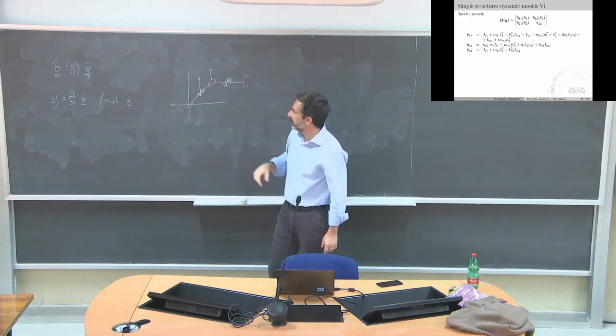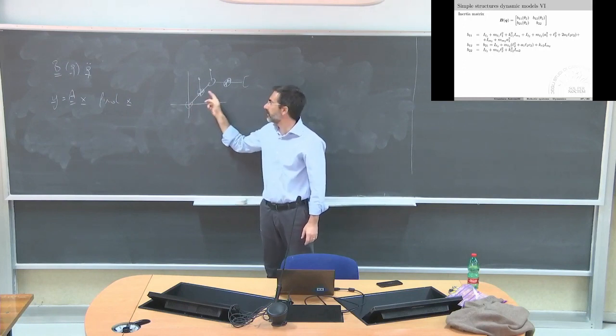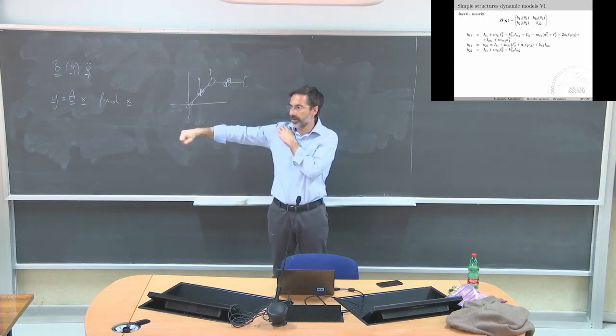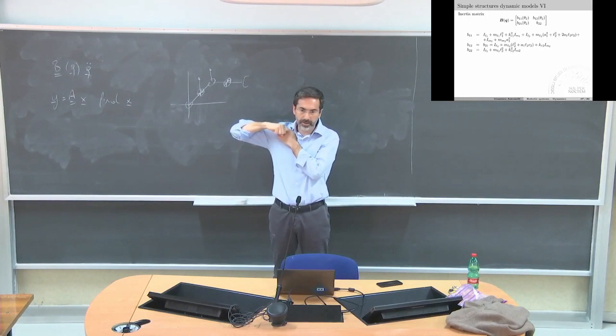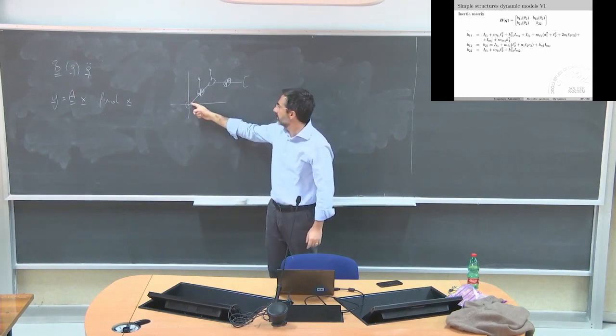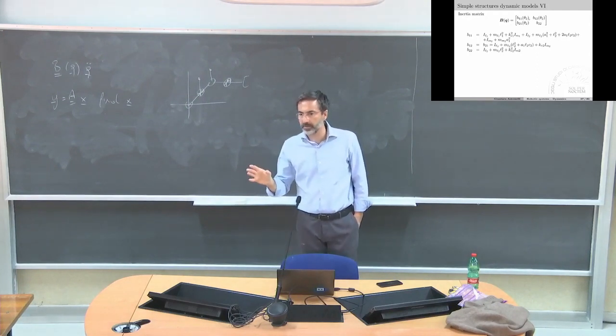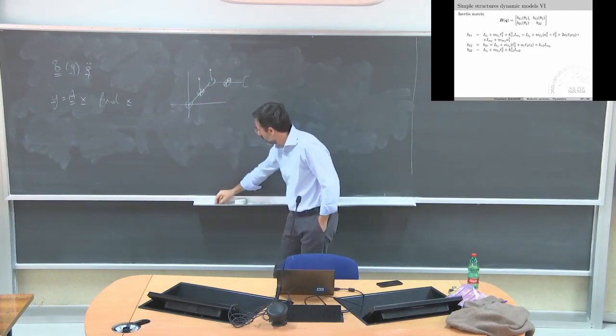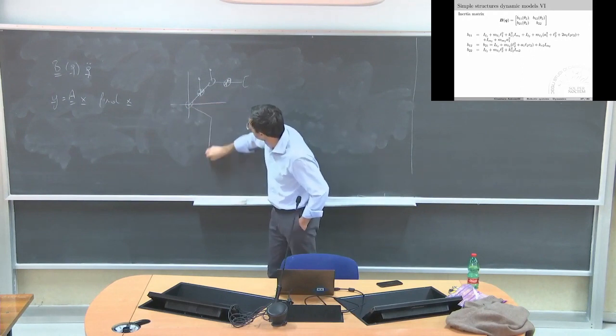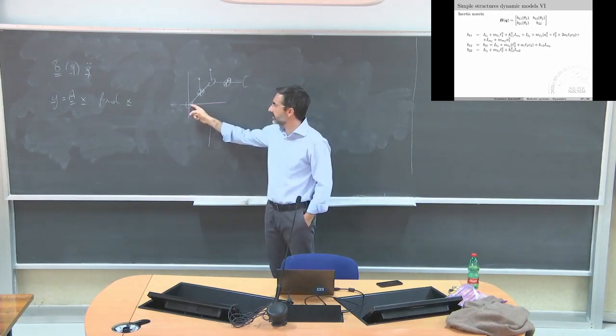On the other hand, this one sees a different inertia because it's the same example as I did earlier. This one is an inertia that is a function of theta_2 but not theta_1, because I don't care if I'm in this or in this configuration - for this guy it's the same.